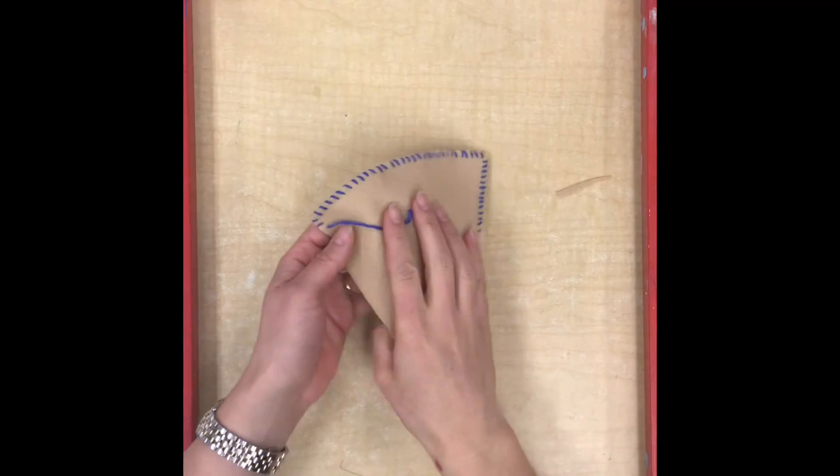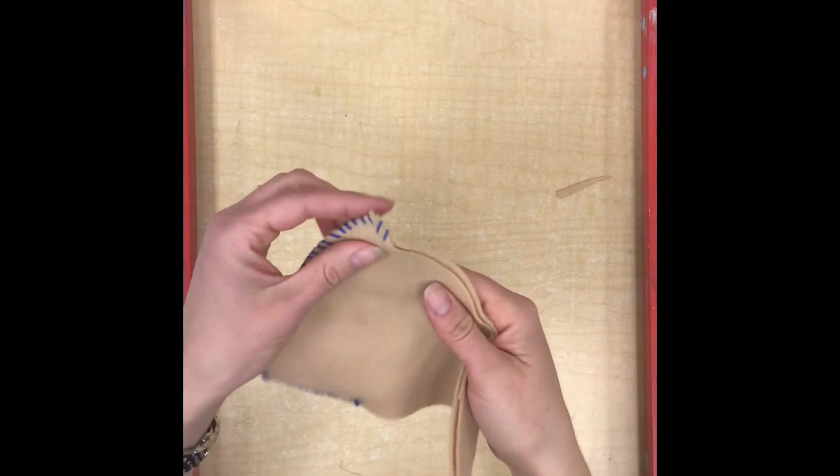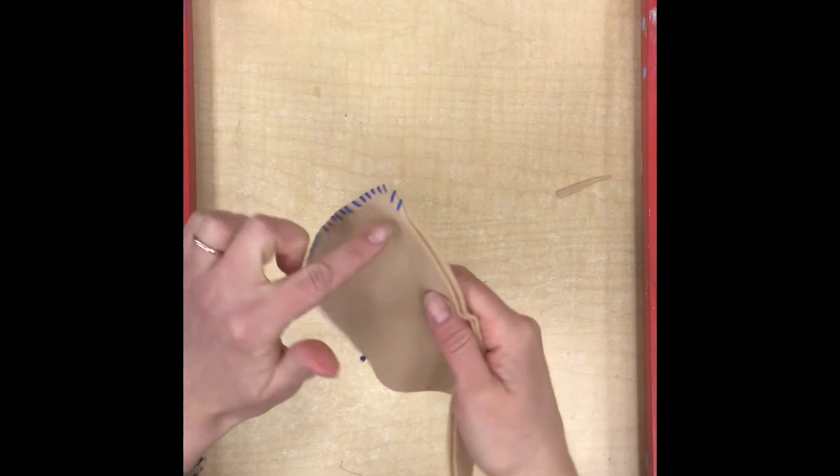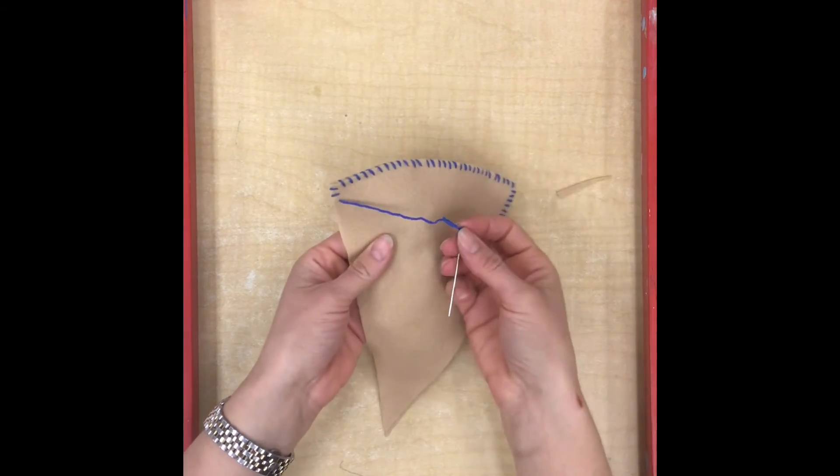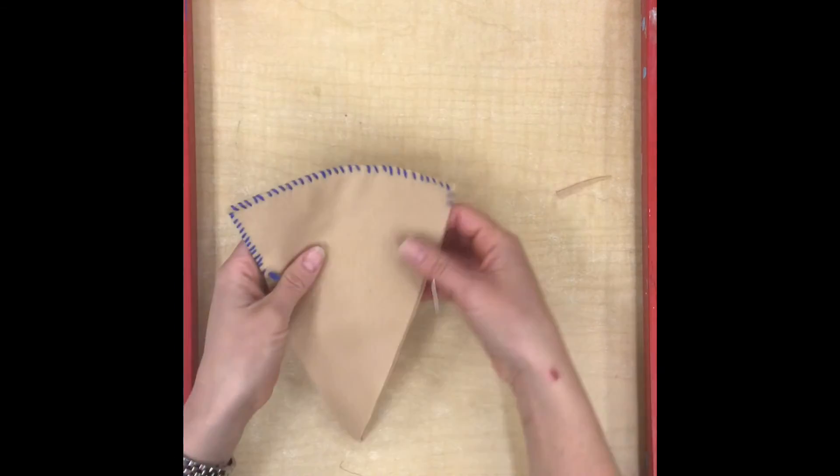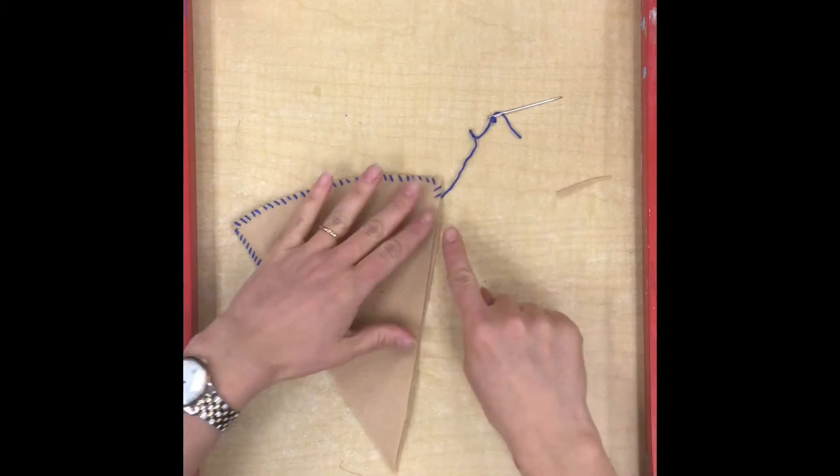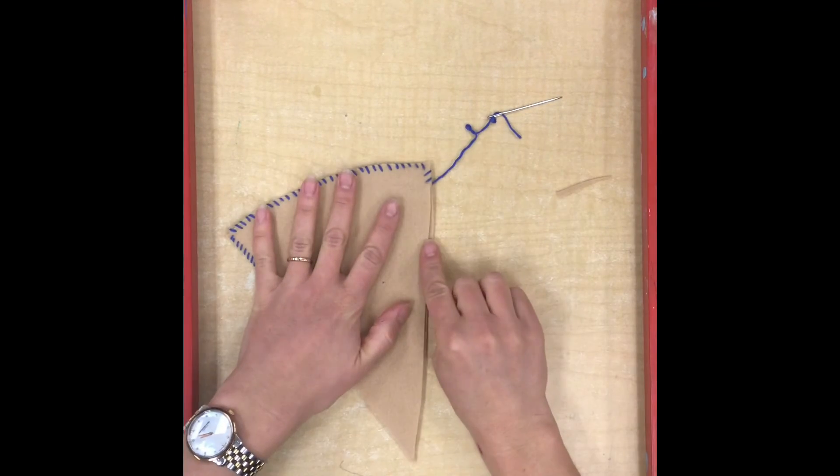So as you're sewing you want to make sure that each of your stitches goes through both pieces of felt, the front piece and the back piece. If your pieces are the same size that step is kind of easy, but if one piece is a little bit bigger than the other you're going to have to pay more attention.